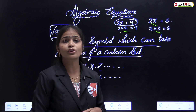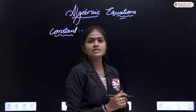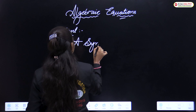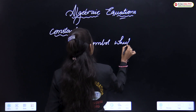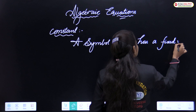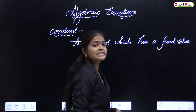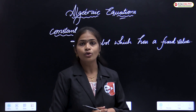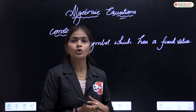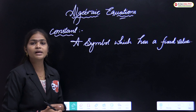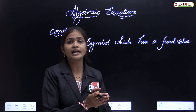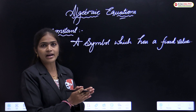After variable, we discuss constant. A symbol which has a fixed value is called a constant. Unlike a variable which can take any value depending on different cases, a constant has a fixed value. Wherever you write that symbol, that value remains the same — we take numerical values as constants.